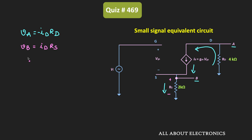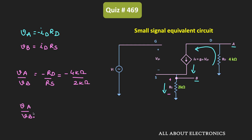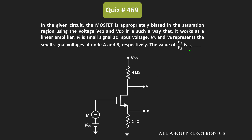Now if we take the ratio Va divided by Vb, it is equal to minus Rd divided by Rs, or minus 4 kilo ohm divided by 2 kilo ohm. So the ratio of Va to Vb is equal to minus 2. That means for the given MOSFET circuit the answer is equal to minus 2.